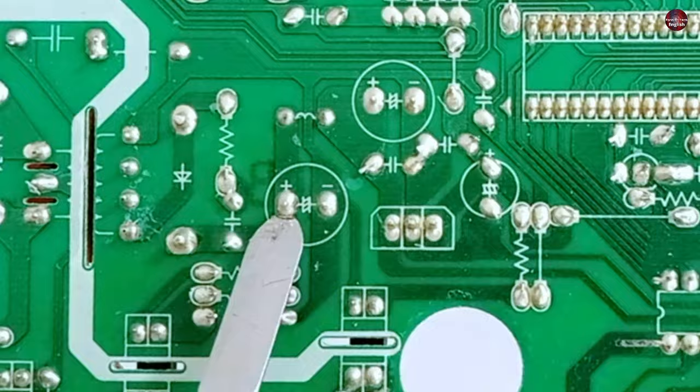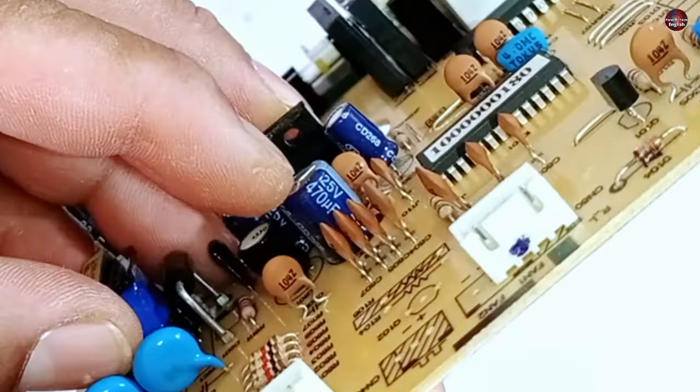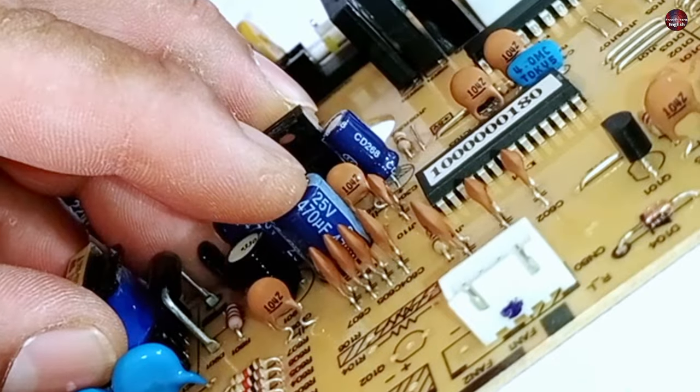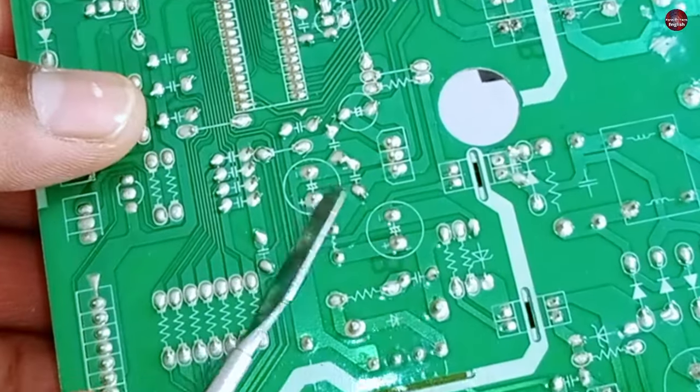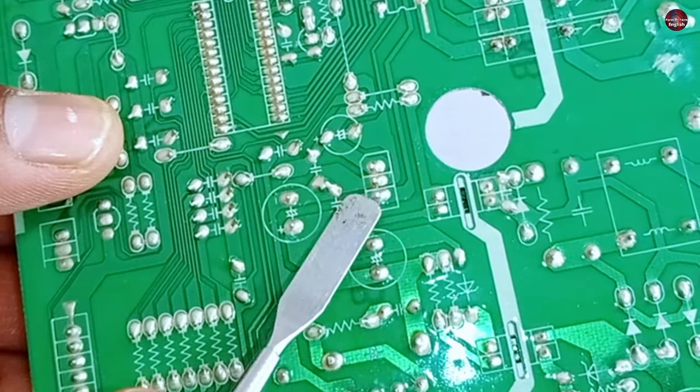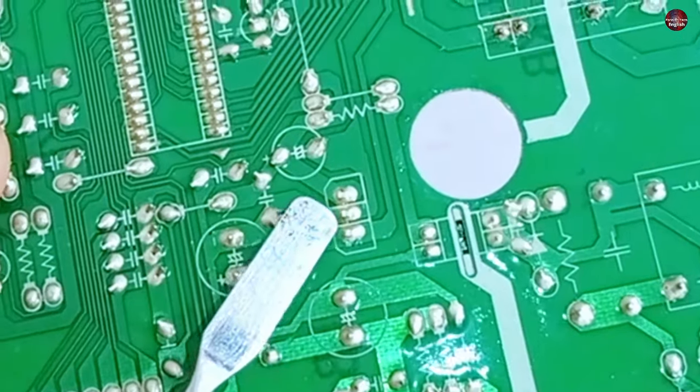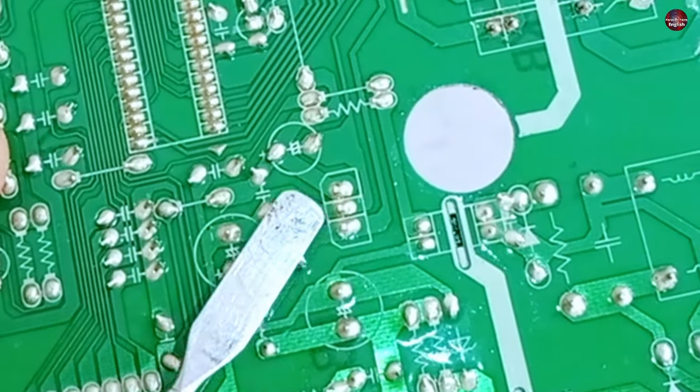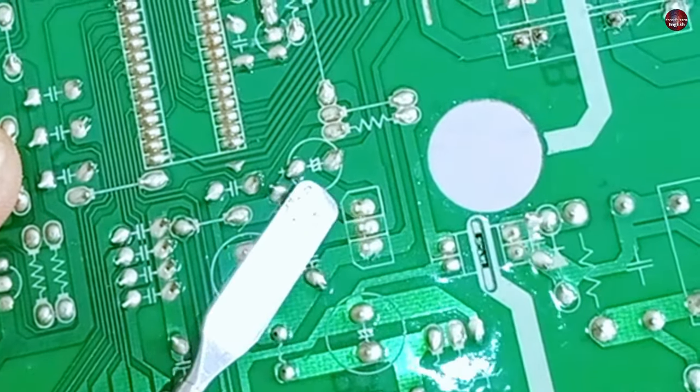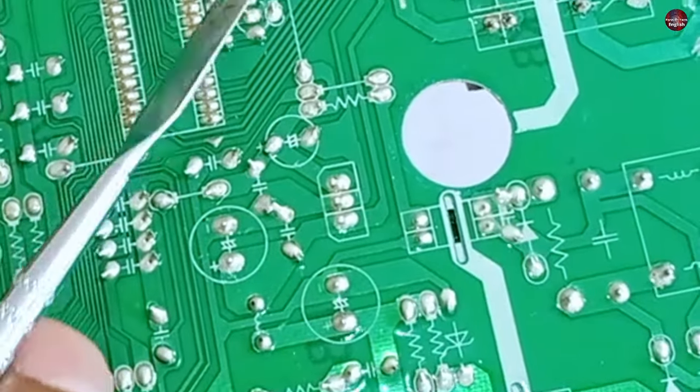A capacitor of 470 microfarads and 25 volts is installed here. If 12 volts are passing through this capacitor, then 5 volts will be applied to this next IC. Because it is a 5 volt regulator IC, this pin is its 12 volt input. The middle pin is the ground. 5 volts will be received at this pin. Then the microcontroller and other components will be turned on.